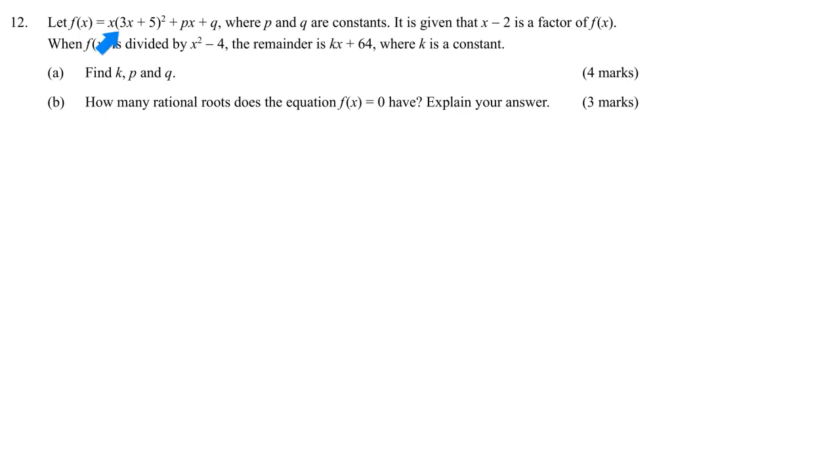This is a question about polynomials where we apply the remainder theorem and factor theorem. There's a function given, a cubic function with x and x squared terms. The question says that x minus 2 is a factor, which means when the function is divided by x minus 2, the remainder will become 0. Because factor means it is divisible, there will be no remainder.